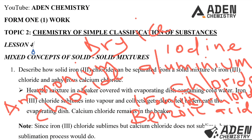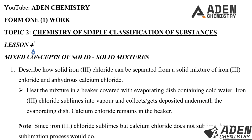In the description: heat the mixture of iron(III) chloride and calcium chloride in a beaker covered with an evaporating dish containing cooled water. Iron(III) chloride sublimes into vapor and collects or gets deposited beneath the evaporating dish, or on the cooler base of the evaporating dish.